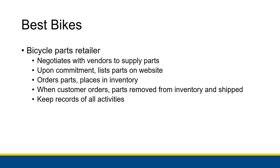I want to talk about an example that the textbook goes into for a fictional company called Best Bikes — a bicycle parts retailer. They have a website where you go and order parts for your bicycle. What they do is negotiate with vendors to supply parts. Once they have that contract, they list the parts on the website with pictures, technical specifications, and all the information that a buyer — whether an individual or a bicycle repair company — would need.